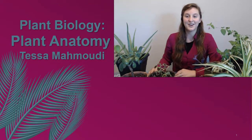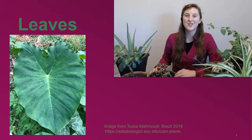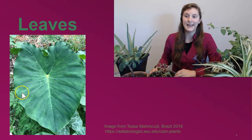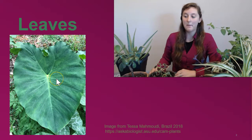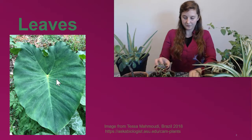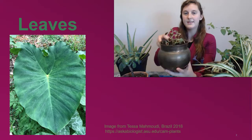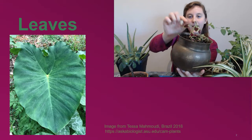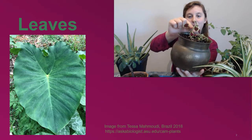Let's get started with leaves. Leaves are the solar panels of plants, acting as the main site of photosynthesis. This large area of the leaf is called the leaf blade. It's attached to the stem by something called a petiole. In this coleus you can see the leaf blade attached by the petiole to the main stem.